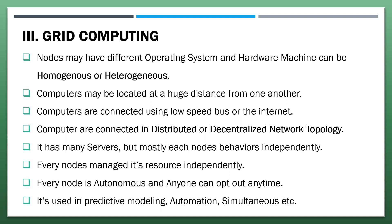Grid computing: nodes may have different operating systems and hardware — machines can be homogeneous or heterogeneous. Computers may be located at a huge distance from one another, connected using low-speed bus or the internet, and connected in a distributed or decentralized network topology. It has many servers, but mostly each node behaves independently and manages its resources independently. Every node is autonomous and anyone can opt out at any time. It is used in predictive modeling, automation, simulation, etc.